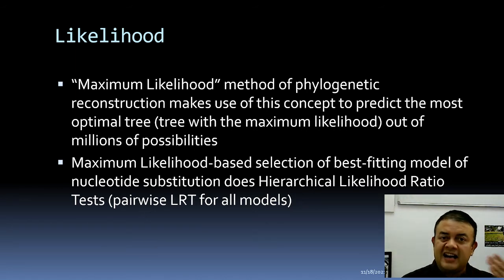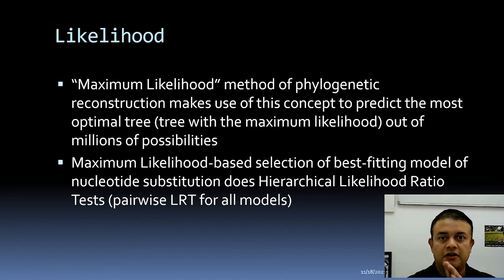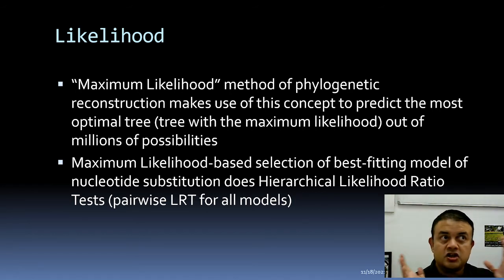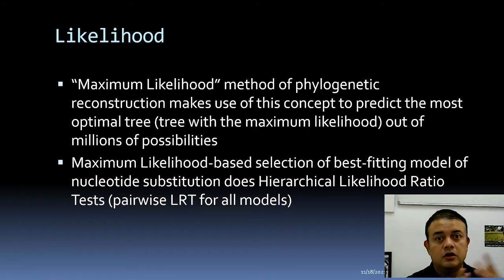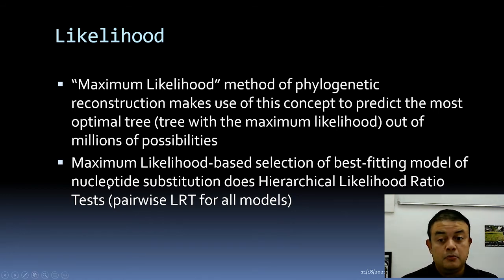Maximum likelihood is one of the most commonly used methods for phylogenetic inference — that is, to construct or reconstruct phylogenetic trees. It is used to predict the most optimal tree: out of millions of possible tree topologies, each tree is assigned a likelihood score, and the one with the maximum likelihood score is chosen. The likelihood ratio test is built into the algorithm, so it runs automatically.